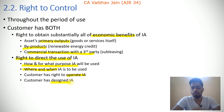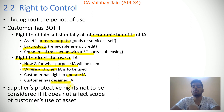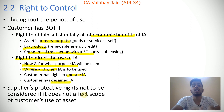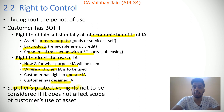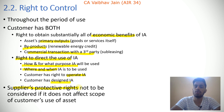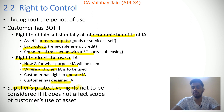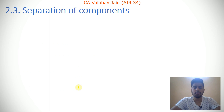Suppliers' protective rights are not to be considered if they do not affect the scope of the customer's use of the asset. For example, if I give you a car on lease and we agree you will not drive it more than 1,000 kilometres, that protective right does not infringe on your right to enjoy the asset for up to 1,000 kilometres. My protective right does not affect your right to obtain benefits or to direct the use of the asset within that limit.